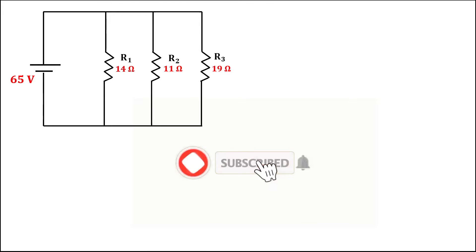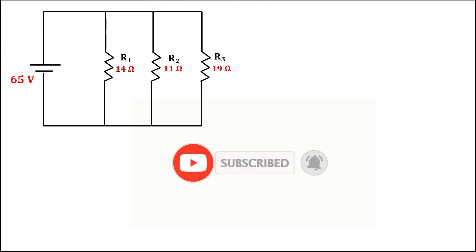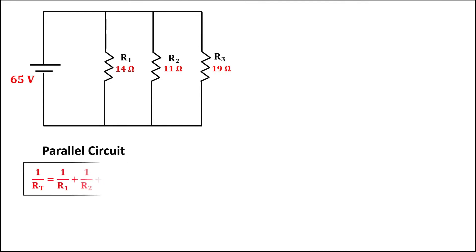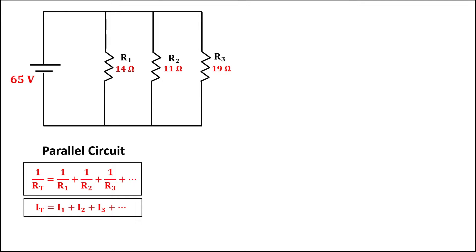Let's have this problem. Given this diagram, this is an example of a parallel circuit. In the parallel circuit, to find the total resistance, this is the formula. And to find the total current, and also to find the total voltage. So from this given,